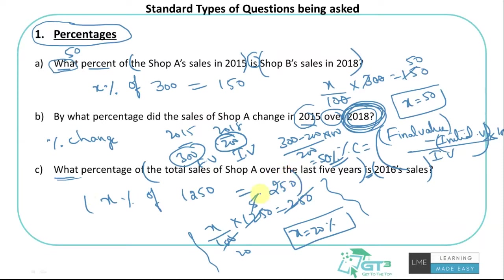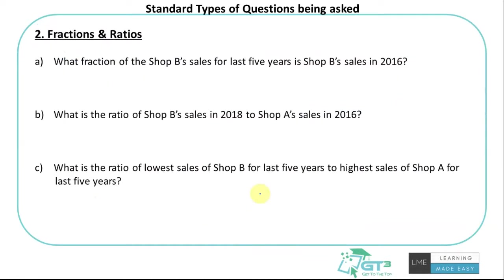The next type of questions involves fractions and ratios — something divided by something. The complexity is figuring out what to divide by what: is it A by B or B by A? Let's work through an example. 'What fraction of Shop B's sales for the last five years is Shop B's sales in 2016?' Let X be the fraction. Shop B's total sales = 250 + 300 + 200 + 150 + 400 = 1300.